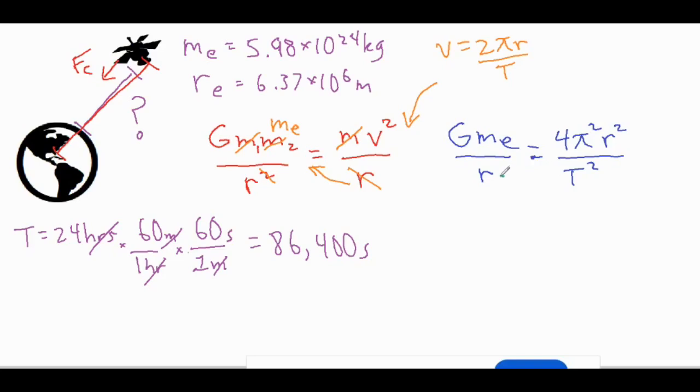Now from there we can do a little bit of rearranging. We can go ahead and cross multiply this r over here, we can go ahead and cross multiply this T squared up here.